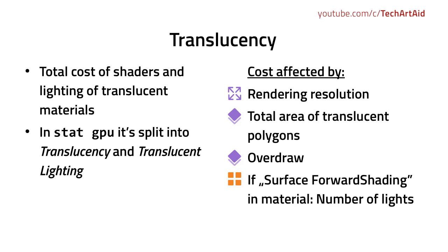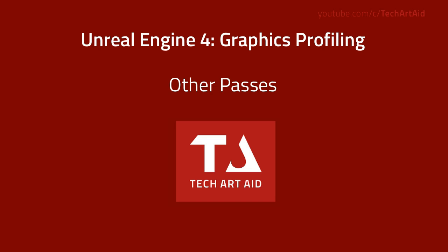Translucency is one big category combining the total cost of shaders and lighting of translucent materials. In StatGPU it's split into translucency and translucent lighting. Its cost is affected by render resolution, but also by the total area of translucent polygons and their overdraw — one translucent polygon behind another, so their costs sum up. As mentioned in part 2, there is a view mode to check overdraw of polygons. If you enabled surface forward shading type of lighting in your material, then the number of lights also affects this pass.